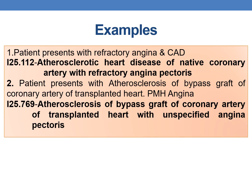Example 1: Patient presents with refractory angina and CAD. Whenever the physician documents both angina and coronary artery disease, by default we assume a cause-and-effect relationship and use the combination code. The correct code is I25.112 — atherosclerotic heart disease of native coronary artery with refractory angina pectoris.